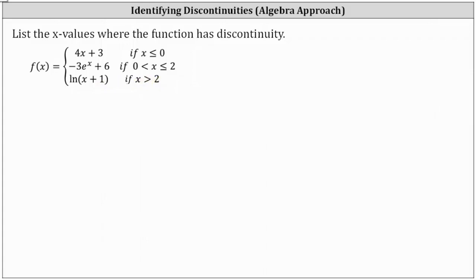Which means the only possible locations for discontinuity would be at x equals zero or x equals two. Remember, for a function to be continuous we would have to be able to sketch the entire function without lifting up our pencil.